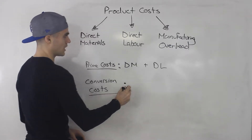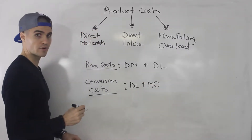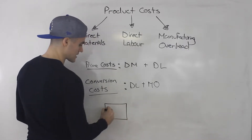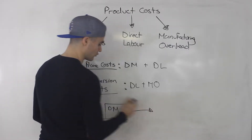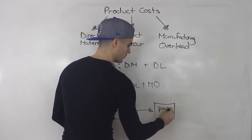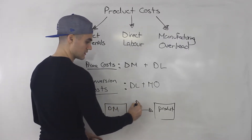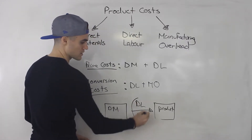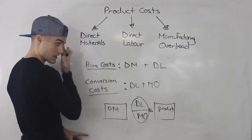There's also something called conversion costs. Conversion costs is basically direct labor plus manufacturing overhead. The way I like to think of conversion costs is: how do I take direct materials and convert them to a product? Well, I'm going to put some direct labor on it and there's going to be some manufacturing overhead as well. So those are your conversion costs to convert direct materials to a product.